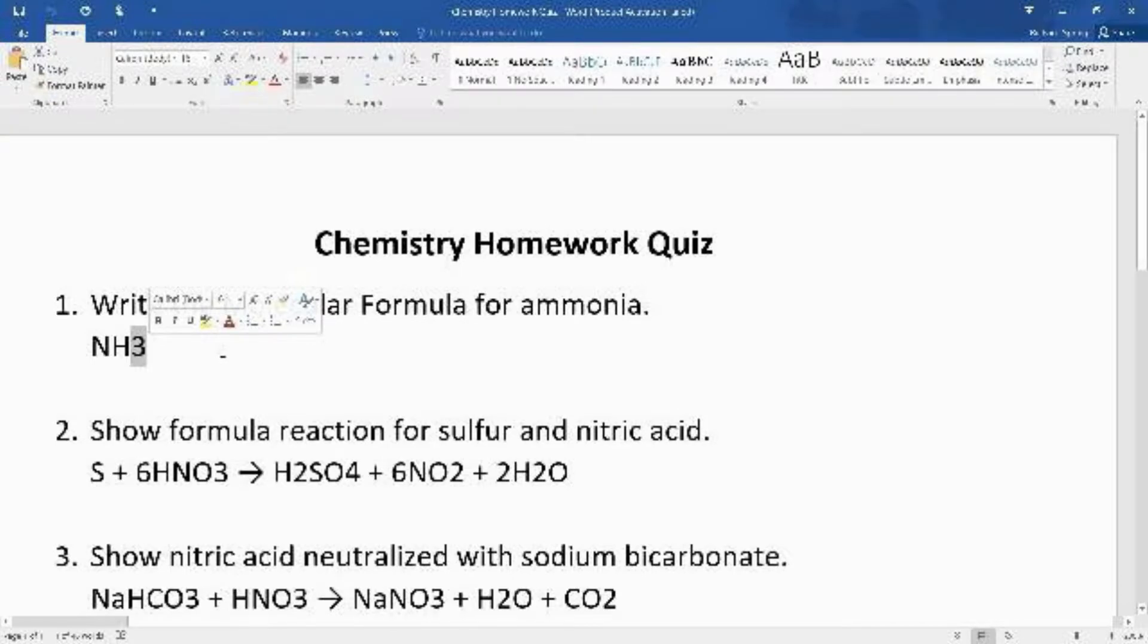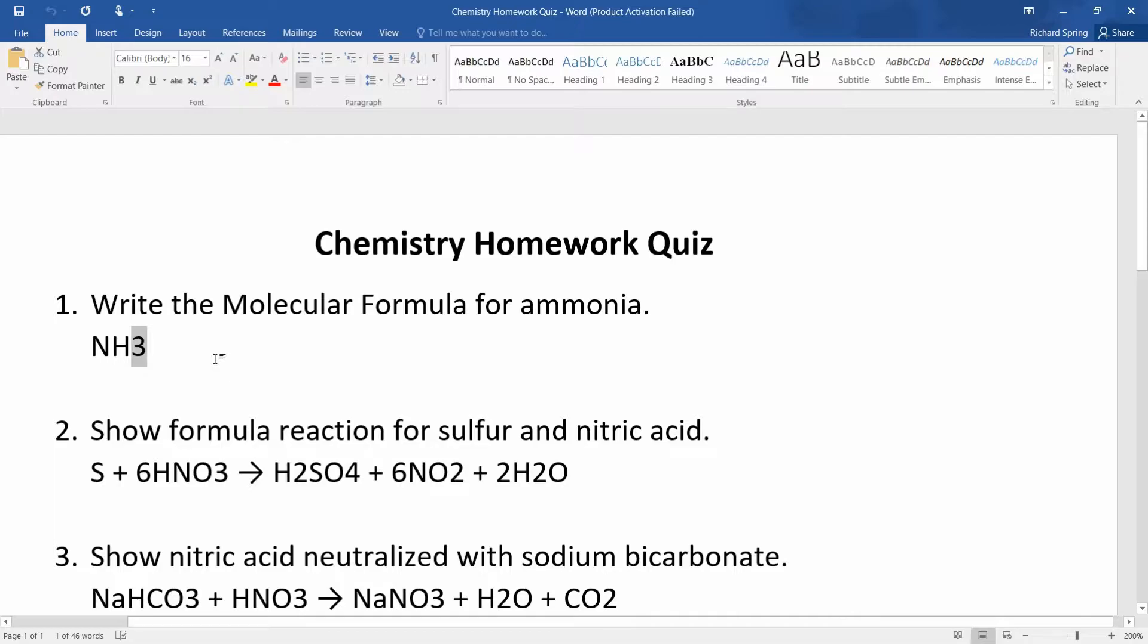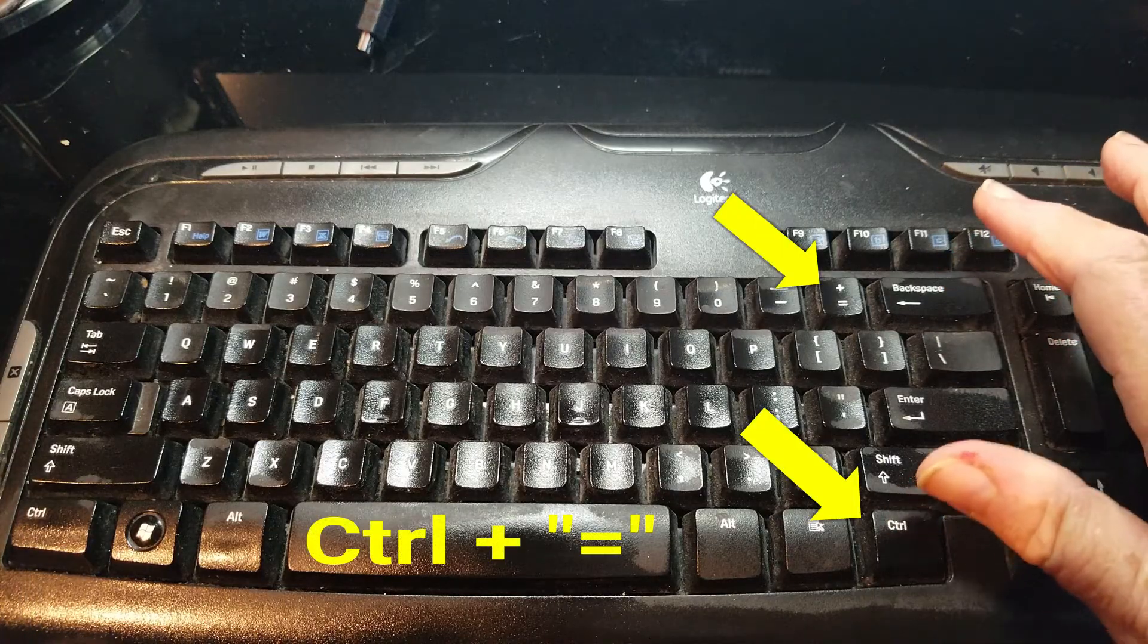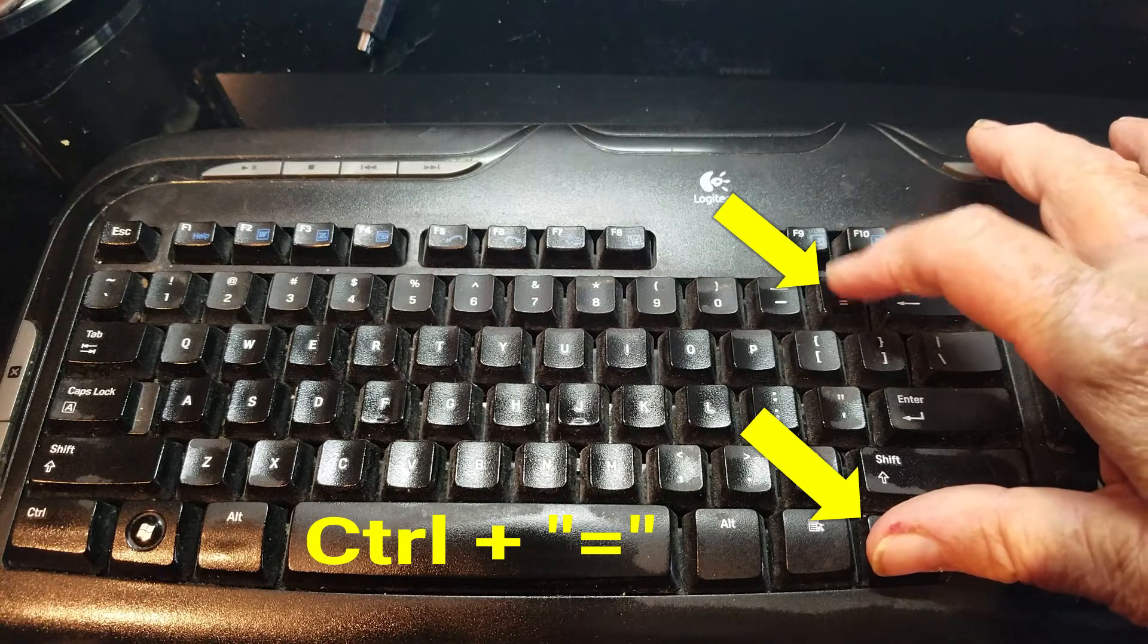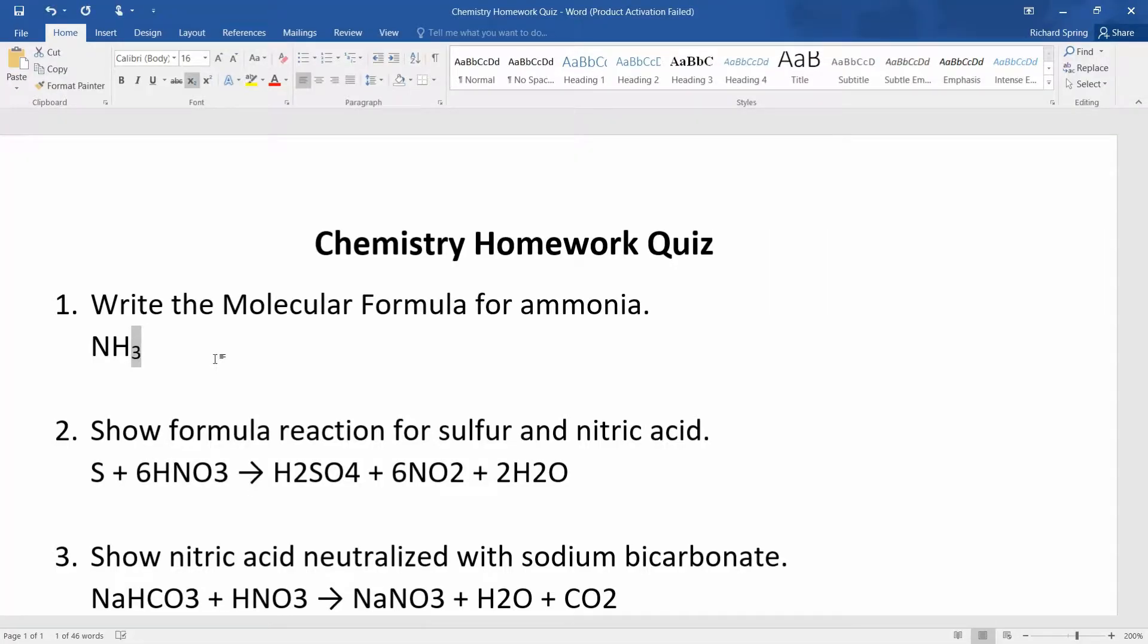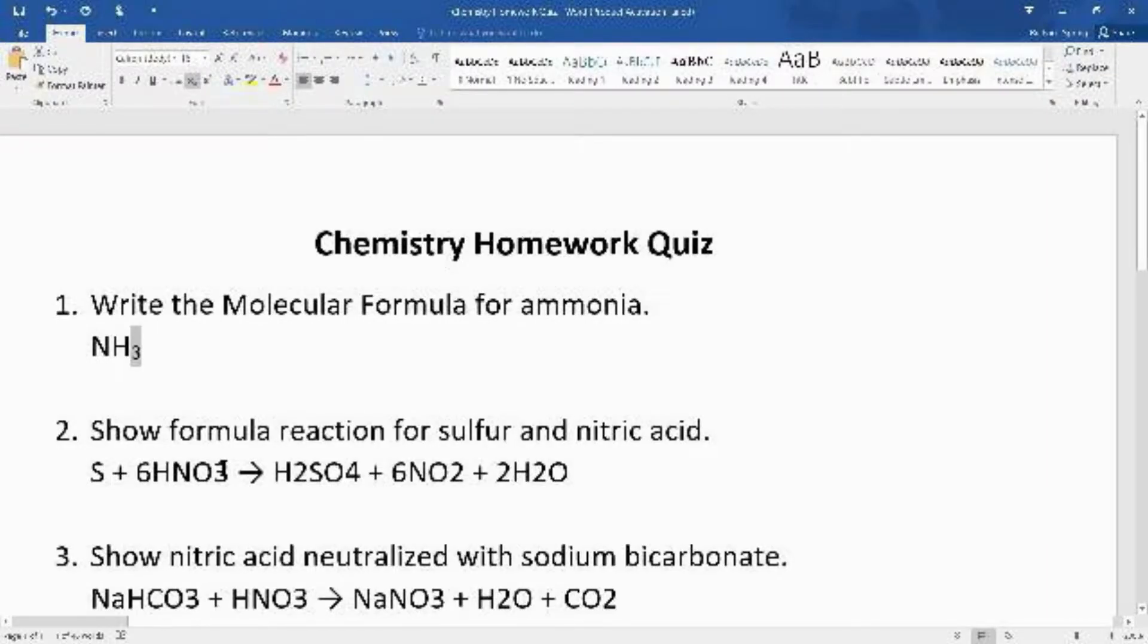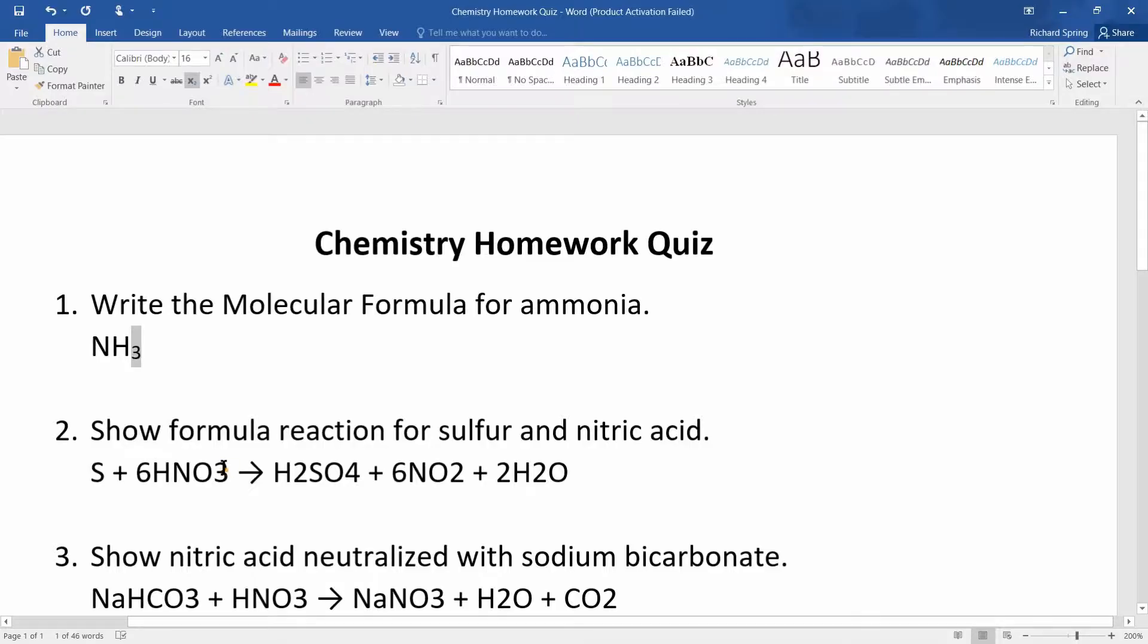Let's go to the first one, ammonia. We'll select the three on NH3, then go to our keyboard. Find and locate the Control and the equal sign key. Hold the Control, press the equal sign. Now the three on nitric acid, we'll select it with our mouse, then on our keyboard find and press the Control key and the equal sign.